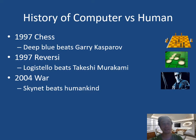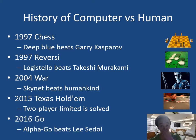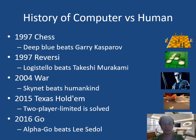Then there is a war of the Skynet with humankind — it is planned, but fortunately we don't have such a future. Then what happened next: in 2015, Texas Hold'em poker, the two-player limited version, is solved. And also in 2016, AlphaGo beats a top-ranked player, and this is one kind of milestone in the game history.